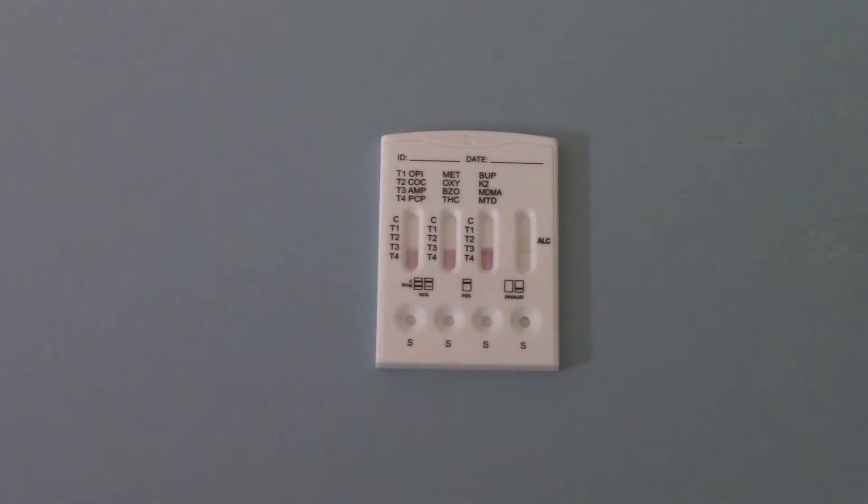Leaving a white background, and you will have, if they are negative results, test lines forming against all those T1, T2, T3 and T4 lines and a nice clear control line at the top.